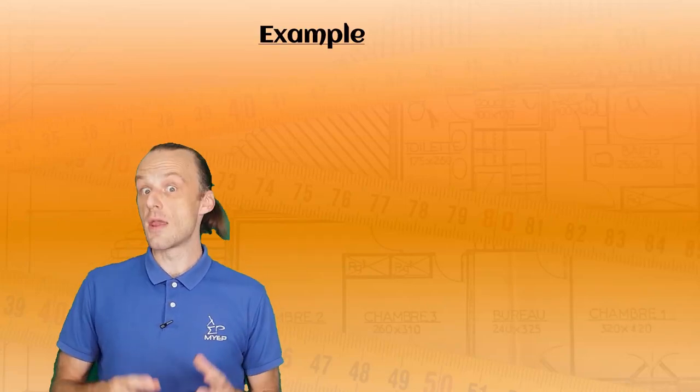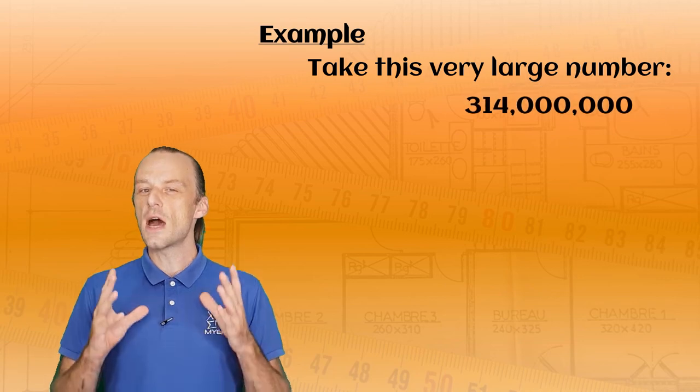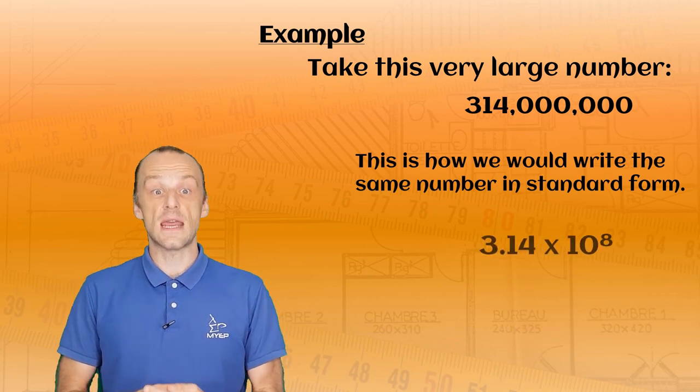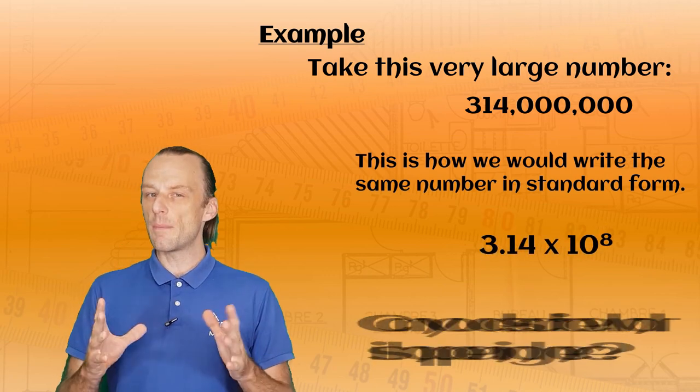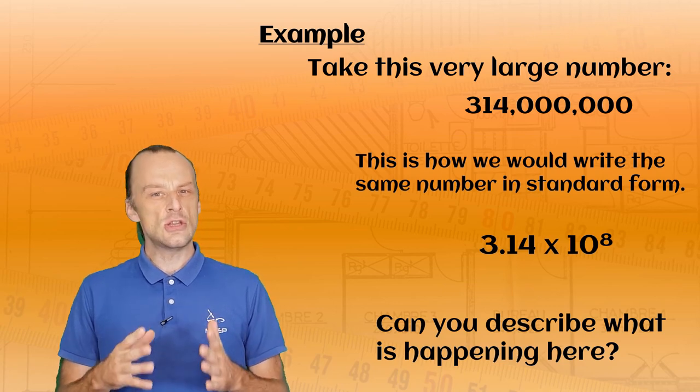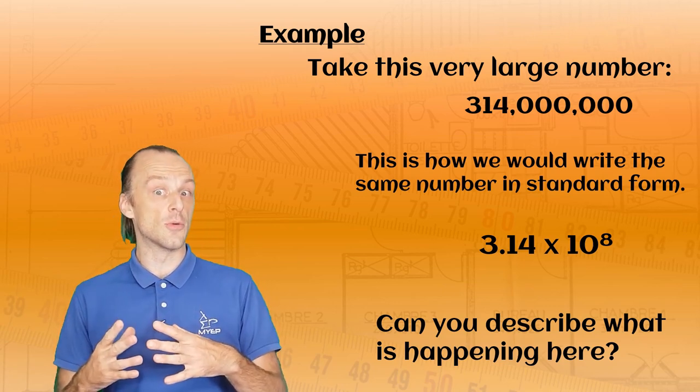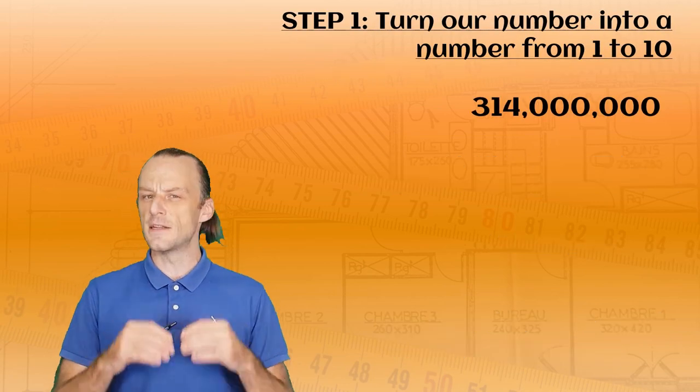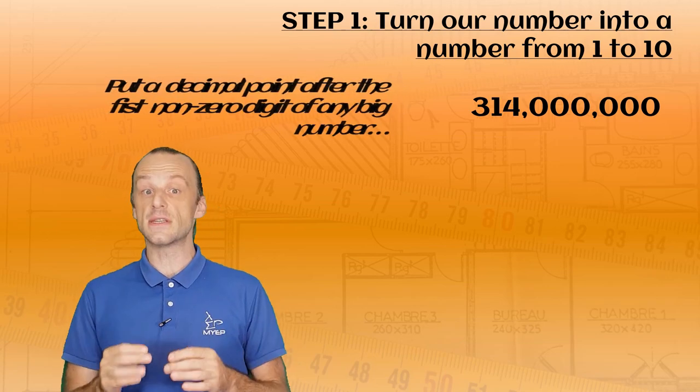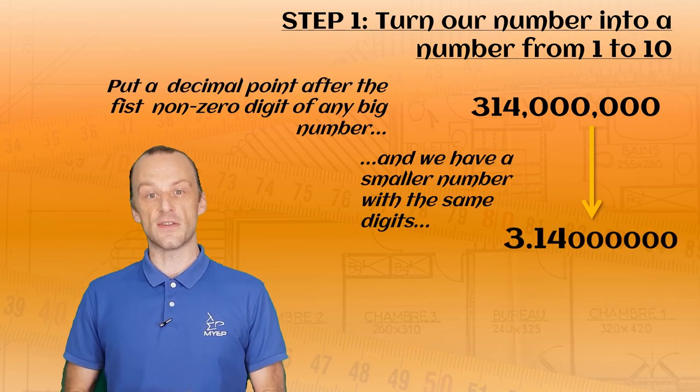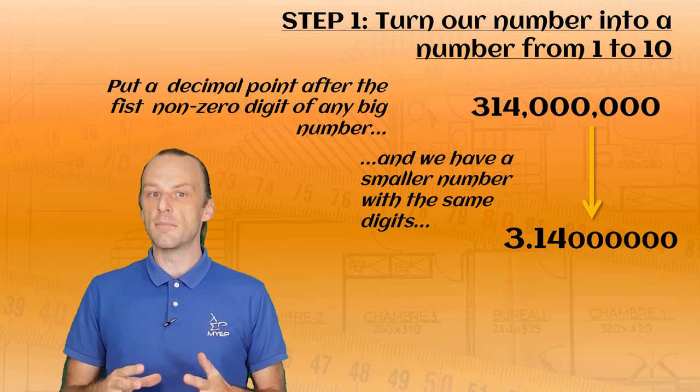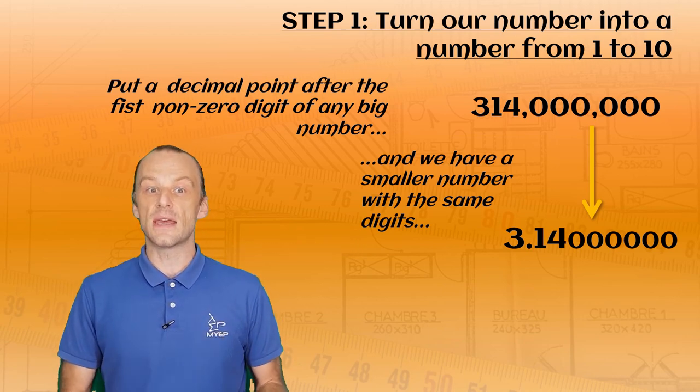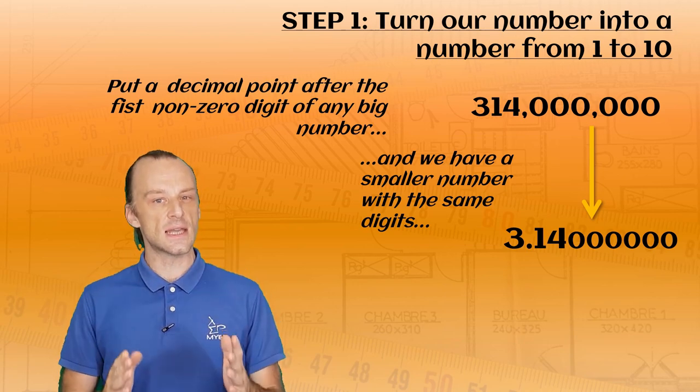Let's look at this example of a really big number. This is 314 million, which is pretty big. Now, here is how we would write the same number in standard form. Just stop and look at it for a minute. Can you describe what is happening to turn the normal form of the number into standard form? You can think of the process as two steps, and in the first step, we put a decimal point after the first non-zero digit of our number. This always makes a number that is larger than 1, and less than 10. And in this case, we've turned our number into a much smaller number with exactly the same digits. Instead of 314 million, it is now 3.14.